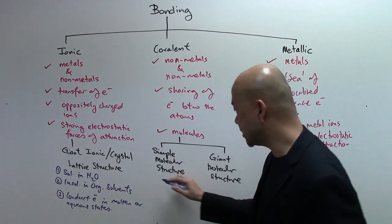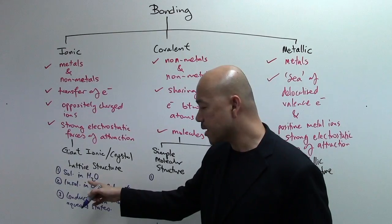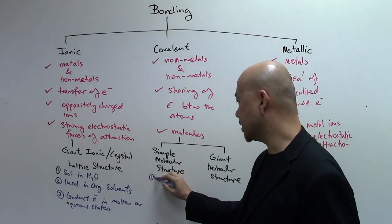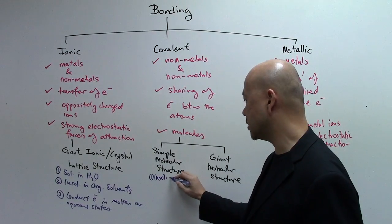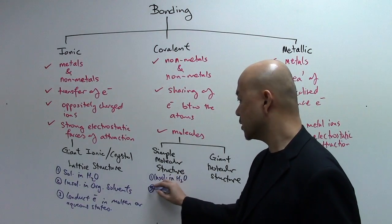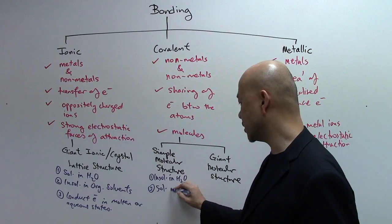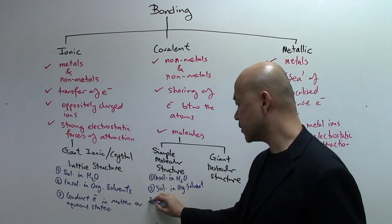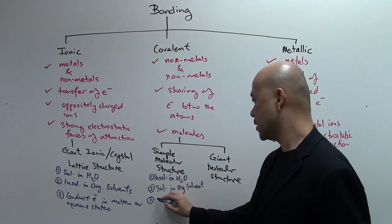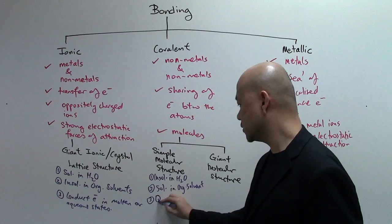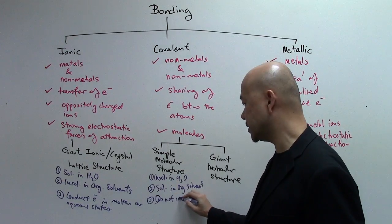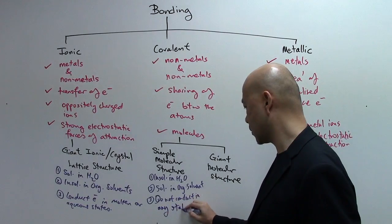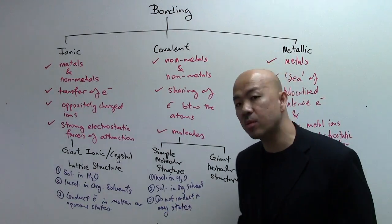The simple molecular structures, the physical properties kind of being the polar opposite of your ionic compound. They tend to be insoluble in water for most of them. They tend to be soluble in organic solvents. Third, they do not conduct in any state. This is for simple molecular structure.